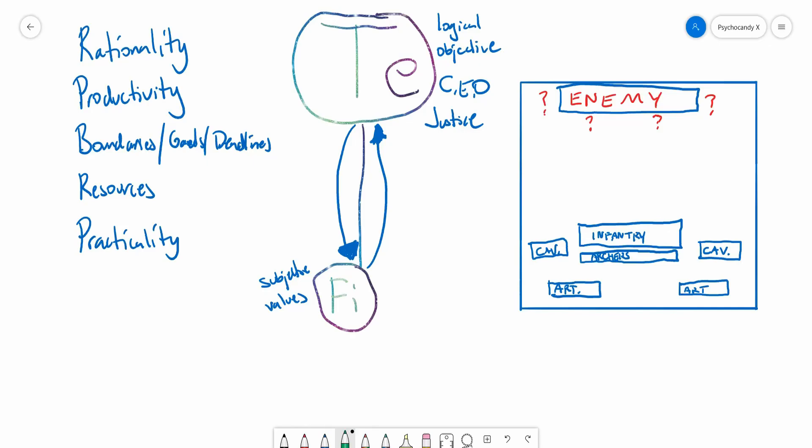All right, so another way that we can look at extroverted thinking is, say for example, this is a battle map and we have our Te commander and lead of an army.